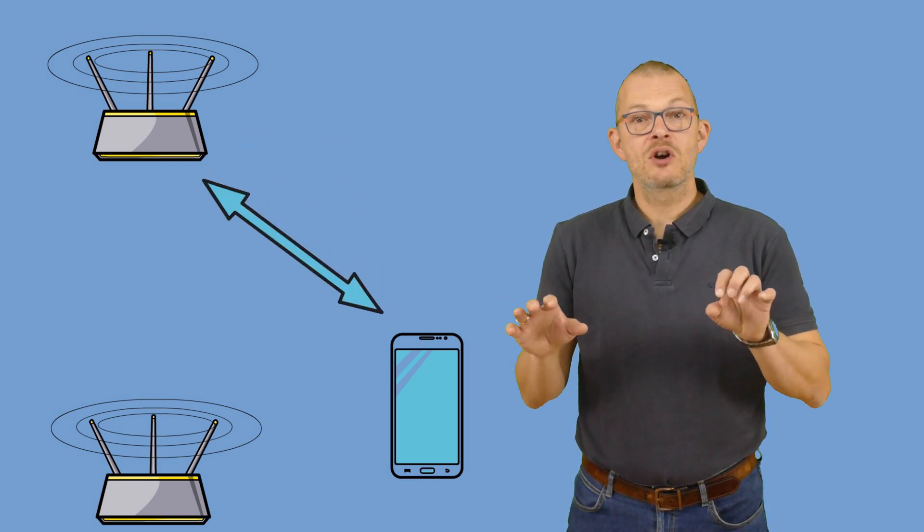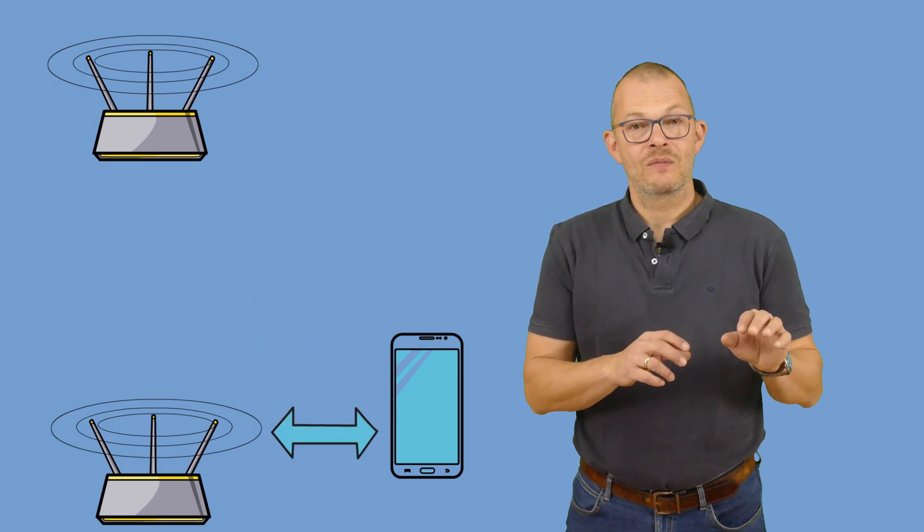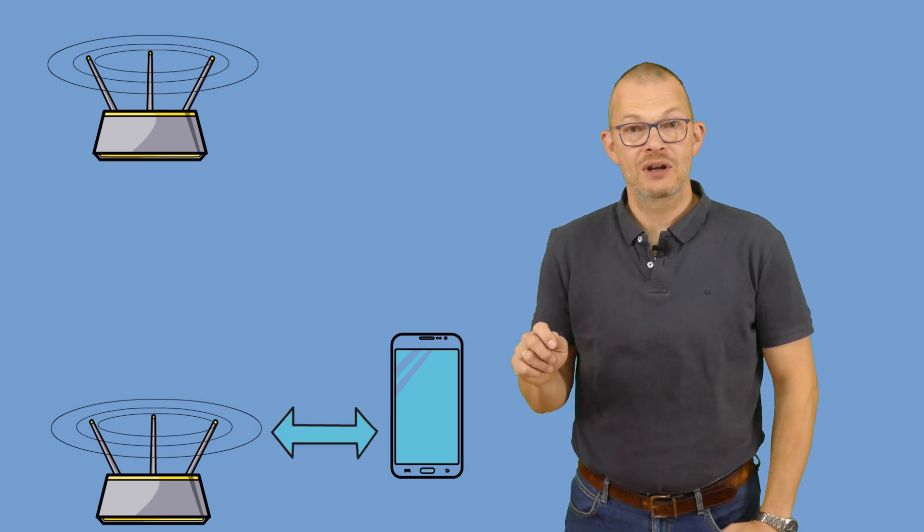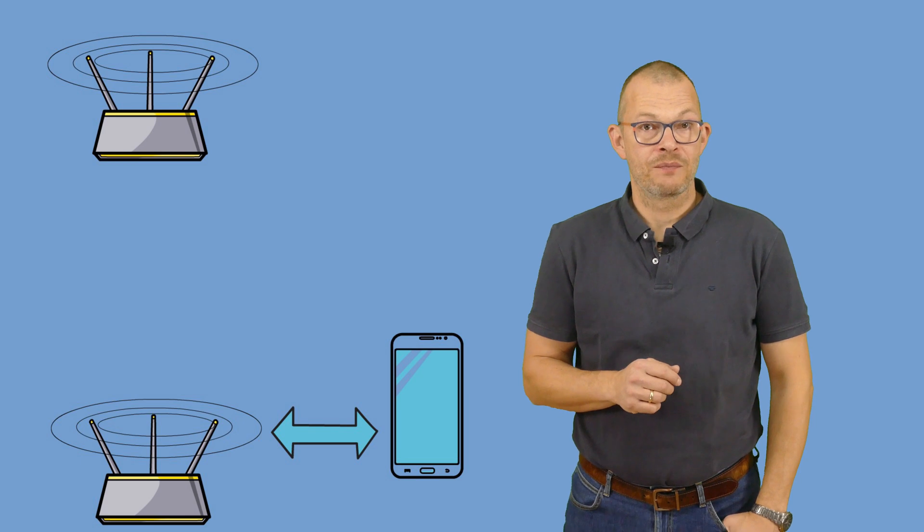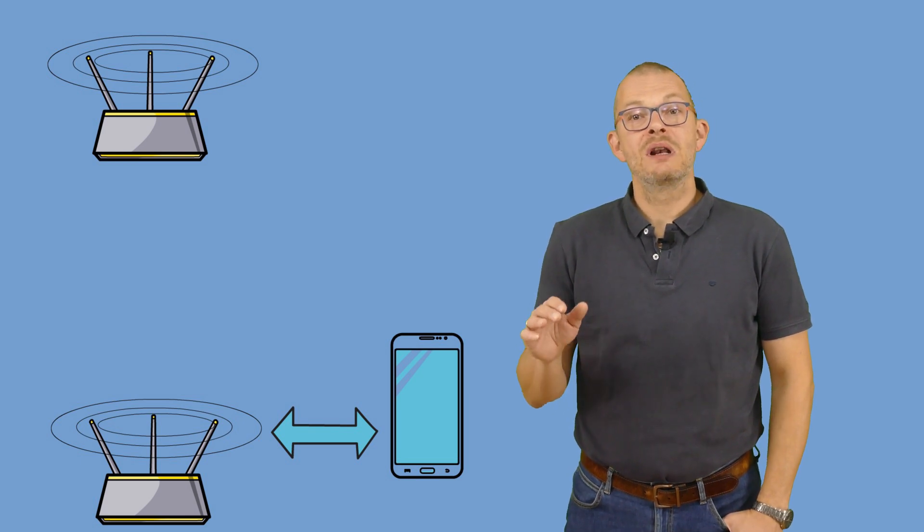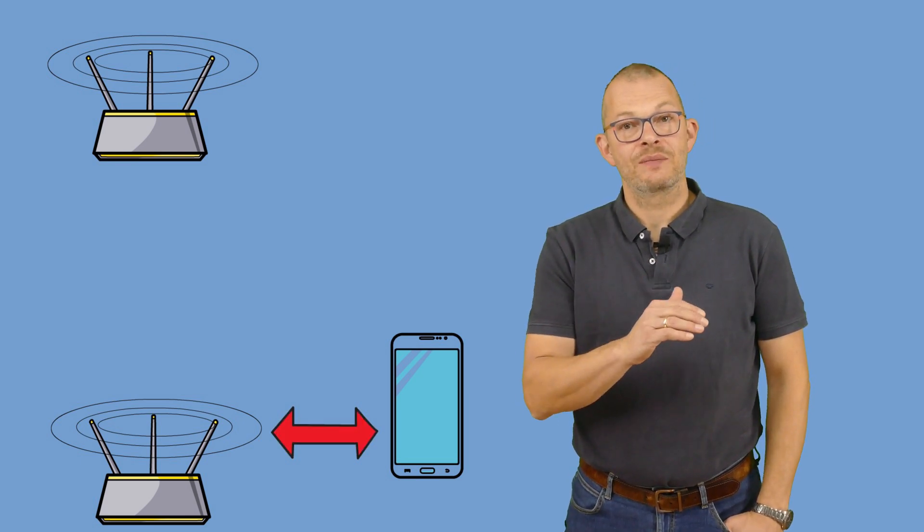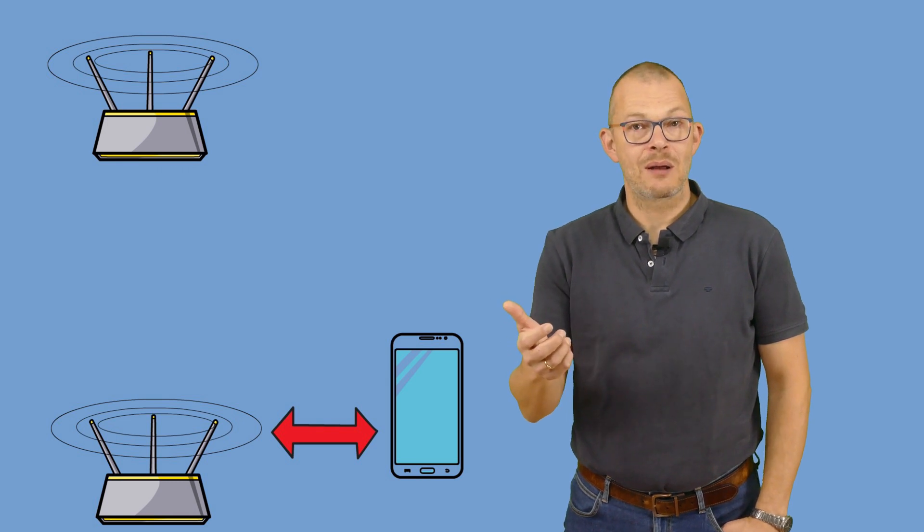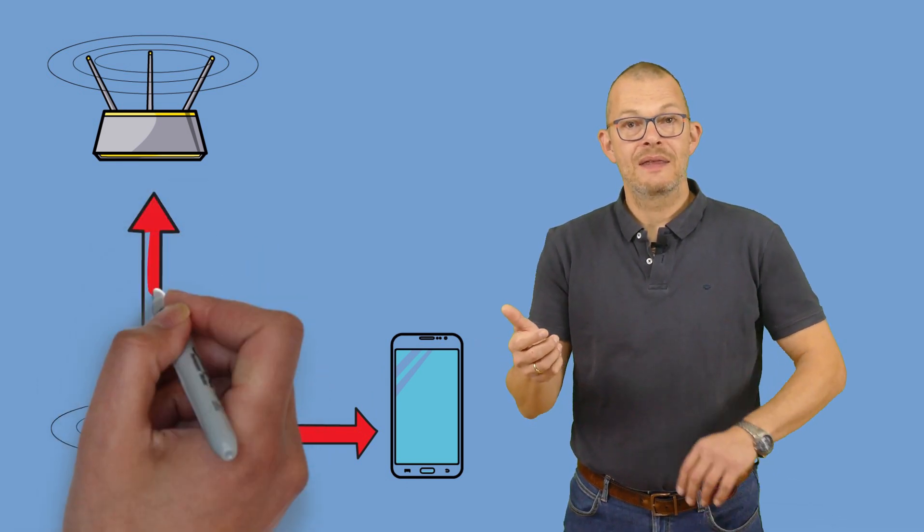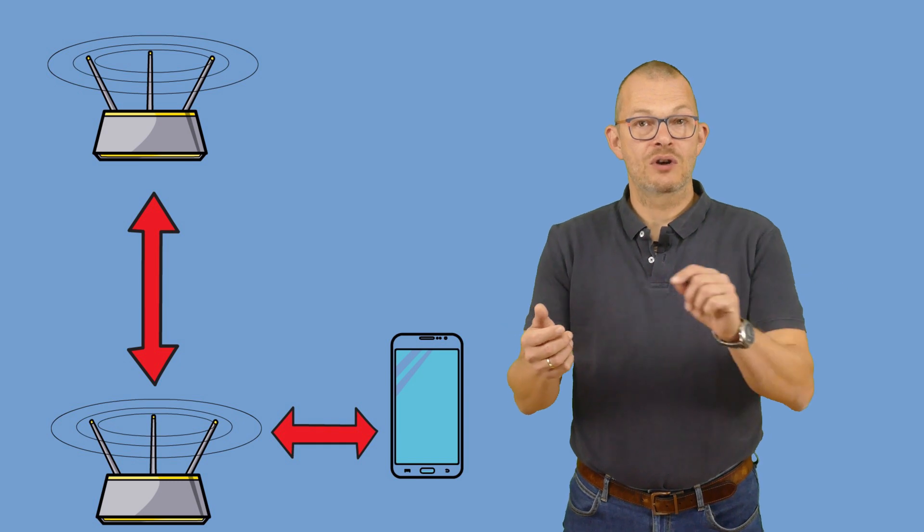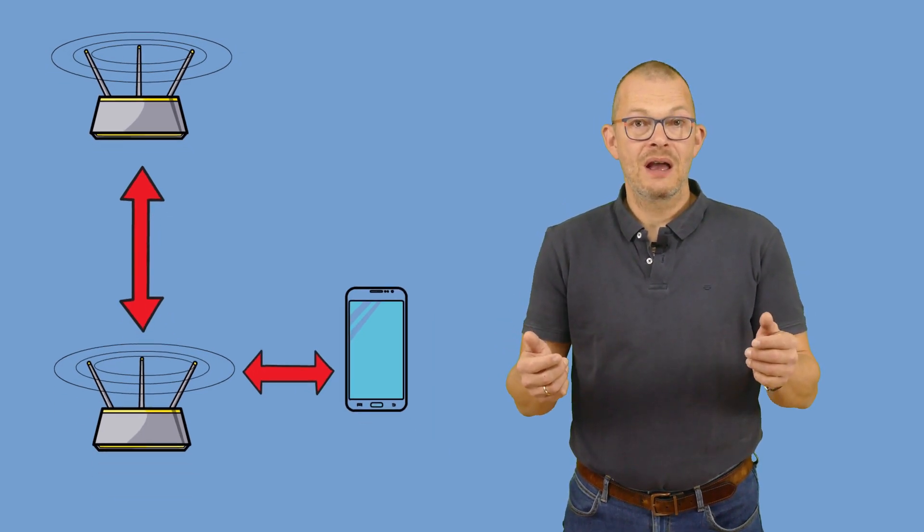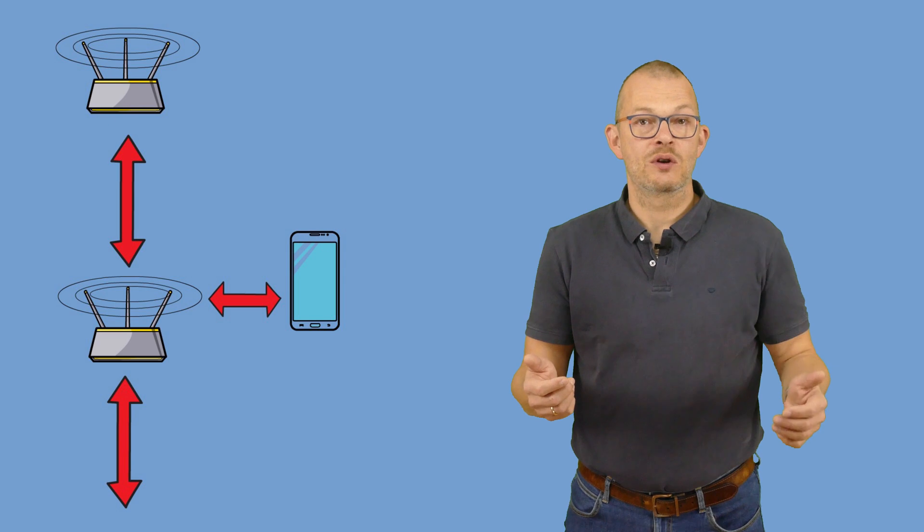But the nodes need to communicate with each other. In a true wireless mesh that happens over radio. So they will occupy multiple channels – at least one to communicate with your tablet or phone, at least one to communicate with each other, and at least one to talk to the router.